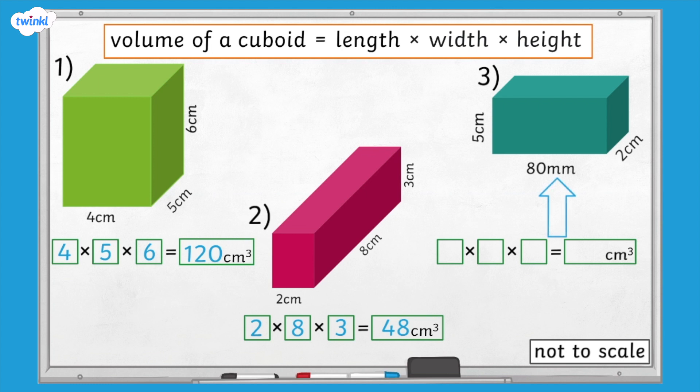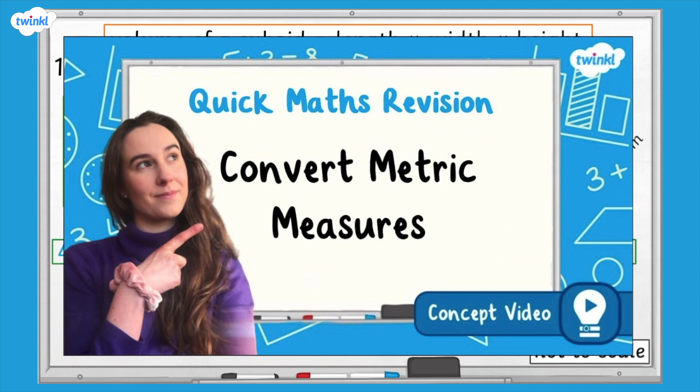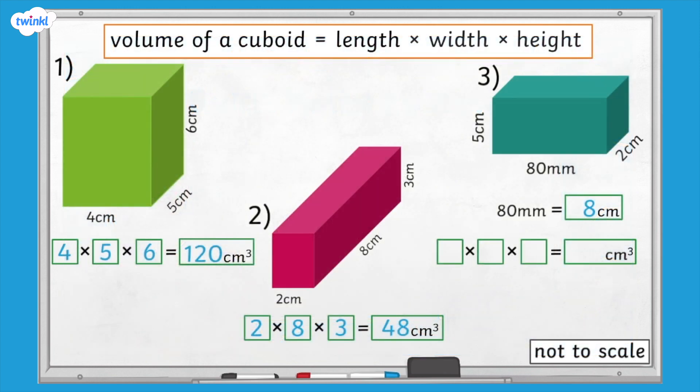This cuboid has one side length in millimetres and the other two in centimetres. We need to convert the side lengths so they're all the same unit of length. We can convert 80 millimetres to centimetres by dividing 80 by 10. 80 millimetres equals 8 centimetres. If you'd like to learn more about converting units of measurement, you can check out our Convert Metric Measures video on the Twinkl website. Now we can use the formula to calculate the volume. 8 multiplied by 2 multiplied by 5 equals 80 cubic centimetres.